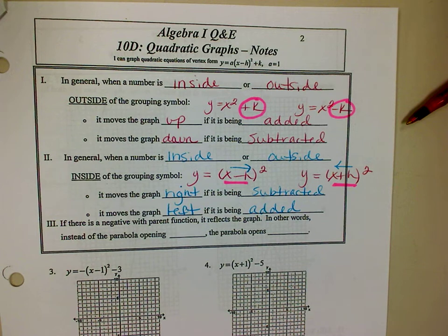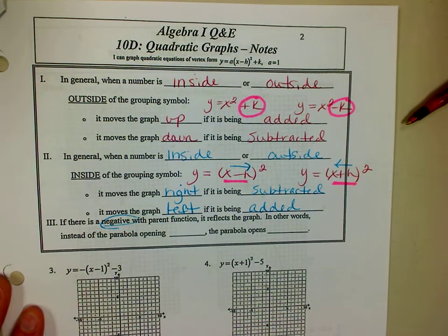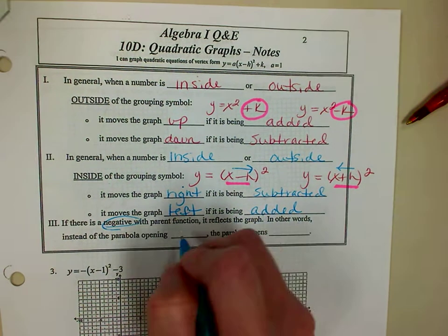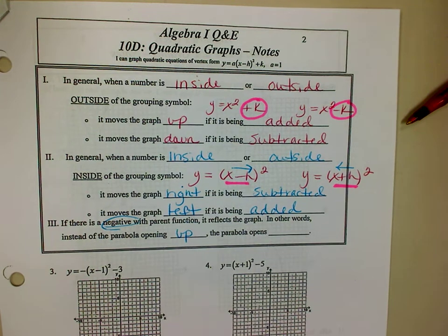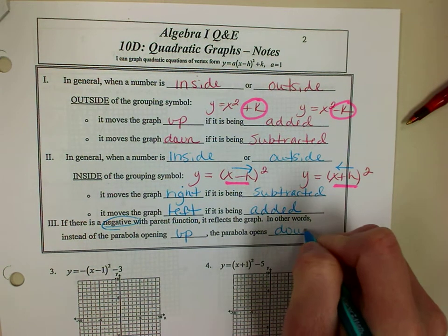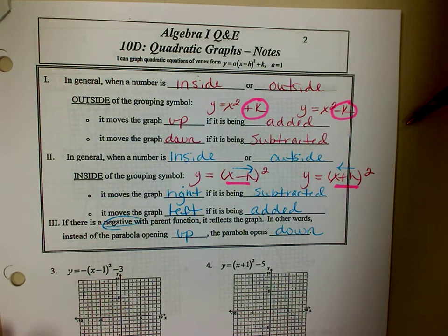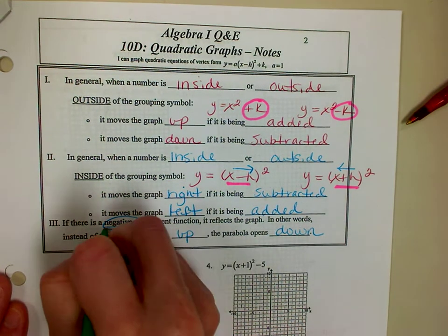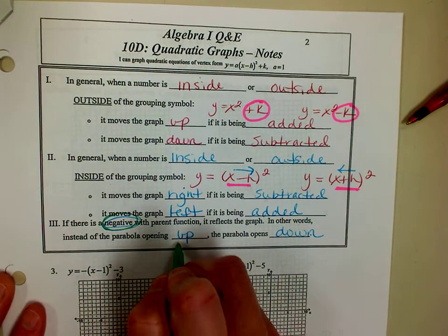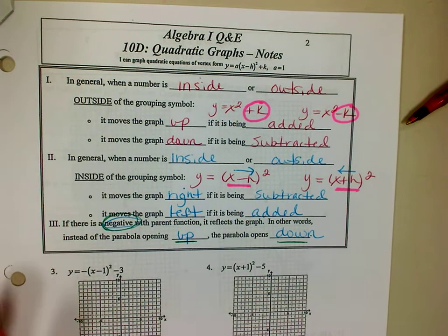Now let's talk about when we have a negative. If there is a negative, then the graph is just going to reflect. So if the parabola opens up, then the negative makes it open down. If there's a negative, it's going to reflect it across the x-axis. So again, if the parabola opens up usually, it's going to open down.